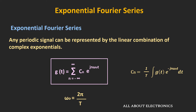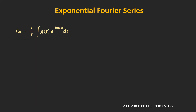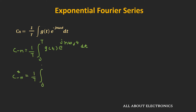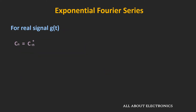Unlike the trigonometric Fourier series, the coefficient Cn can be a complex number. However, whenever the signal g is real, the pair Cn and C−n will be complex conjugates. C−n is given by (1/T) times the integral from 0 to T of g·e^(jnω0t) dt. Taking the complex conjugate of C−n, and noting that g is real so it remains unchanged, we get (1/T) times the integral of g·e^(−jnω0t) dt, which is exactly Cn. Therefore, for a real signal, Cn and C−n are complex conjugates.